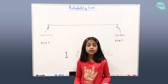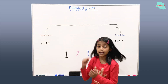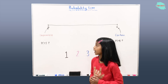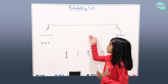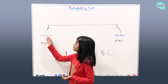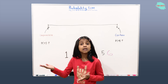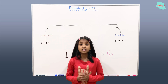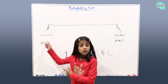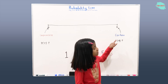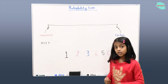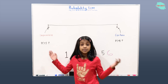Hi, welcome to Fun Math. Today we're going to be talking about the probability line. Before I move on to this video, I hope you watched my video on probability. Okay, here we have a line and the line is called the probability line. On this side there is zero and on the other side there is one. Zero is an impossible event and one is a certain event. So here we have the numbers one through six.